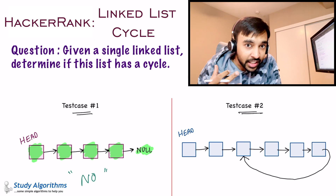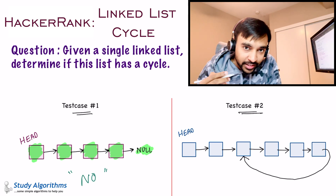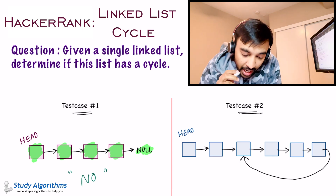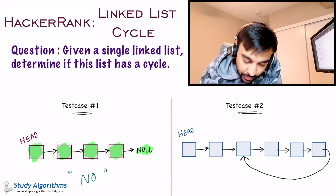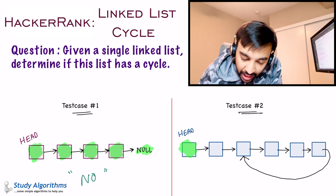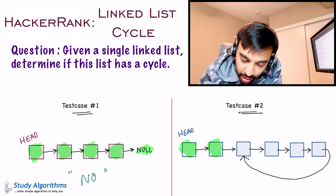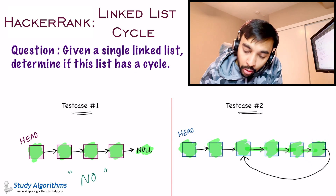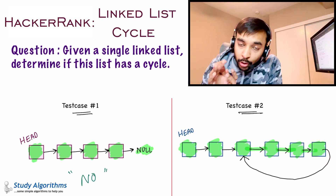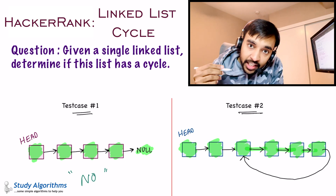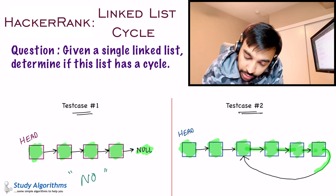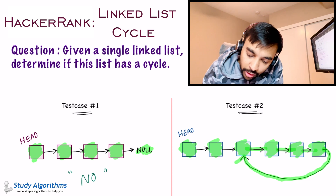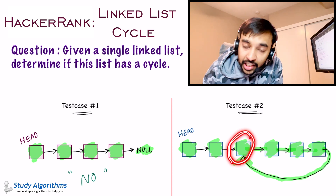But what happens when a list has a cycle? Let us look at test case number two. You start from the head pointer, traverse it, then do a next to reach the next one, then next again, and keep going. Now look at the last node that we have reached — you don't see a null over here. Instead, when you do a next again, this last pointer will take you back to one of the internal nodes in the linked list.